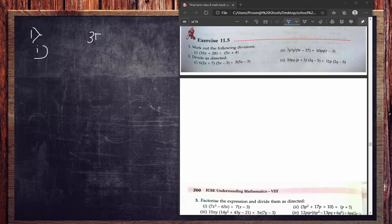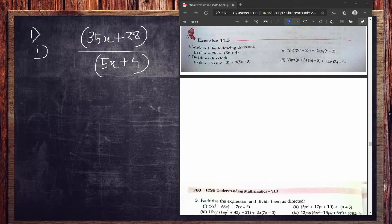So 35x plus 28, that is problem 1.1, should be divided by 5x plus 4. See, it is naturally not possible, but if we do factorization in the numerator then it may be possible. So what we can take as a common factor in the numerator? That is 7. So it will remain as 5x and the next part will remain as 4.